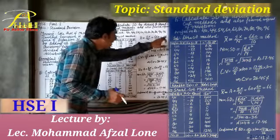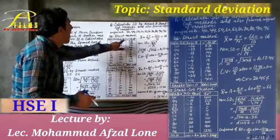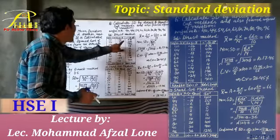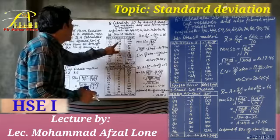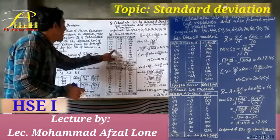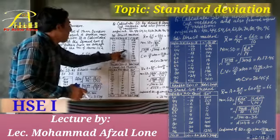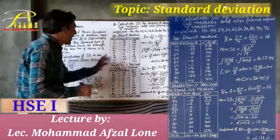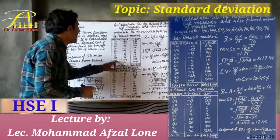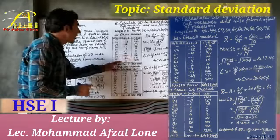We are subtracting 66 from all values of x: 40 − 66 = −26; 44 − 66 = −22; 54 − 66 = −12; 60 − 66 = −6; 62 − 66 = −4; 64 − 66 = −2; 70 − 66 = +4; 80 − 66 = +14; 90 − 66 = +24; 96 − 66 = +30.